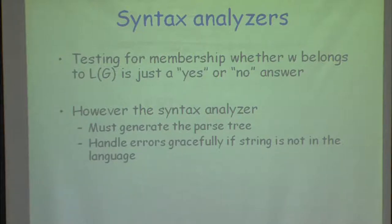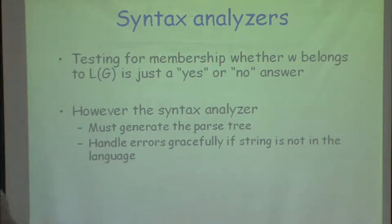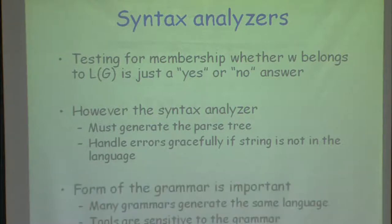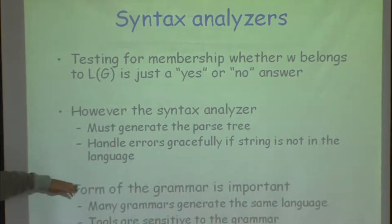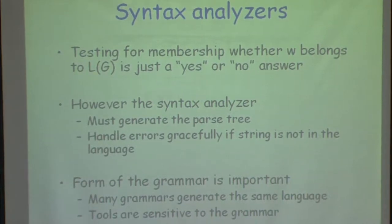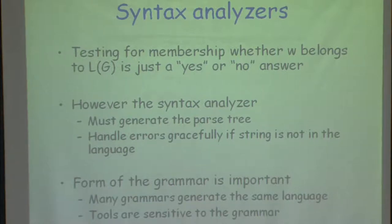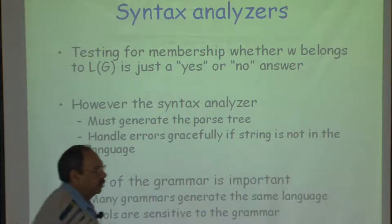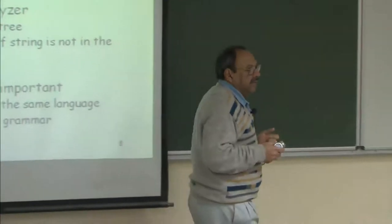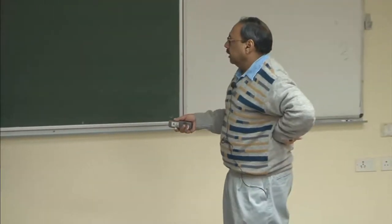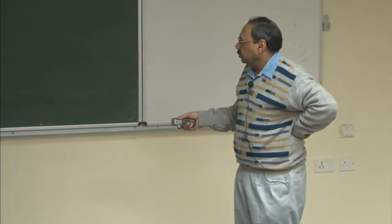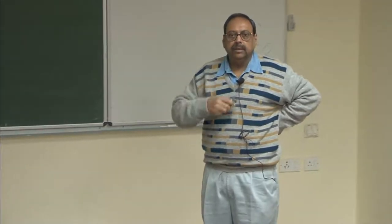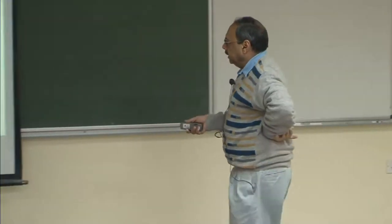The syntax analyzer must generate a parse tree — which captures the order in which I am doing the derivation — and it must also handle all errors gracefully, meaning it should not just stop at the first error but should try to find as many errors as possible, recovering from an error and continuing. An important thing is that the way I write my grammar matters, because I can write multiple grammars which specify the same language. So I can write G1 and G2 with totally different forms but generating exactly identical strings. The form is important — whether I pick G1 or G2 for parsing matters — and we will see what properties determine which grammar is better.